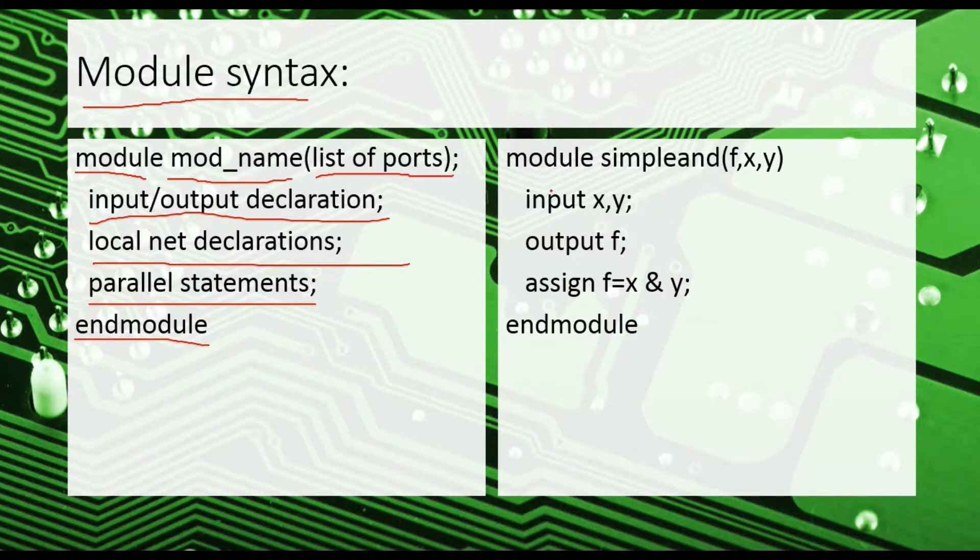Let us take an example. For example, if we want to make a simple AND gate, what we will do is let us consider that x and y are the inputs whereas f is the output. So we will write: input x, y; output f; assign f = x & y. This x and y will do AND of x and y and will assign the value of x and y to f. So whatever answer we will get from here, that value will be assigned to f, and then we wrote endmodule. So friends, I hope you got to know how we can make an AND gate by writing just these three statements.